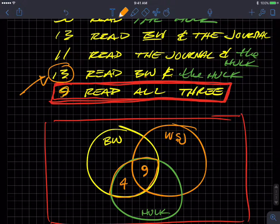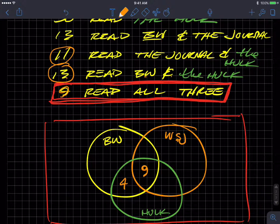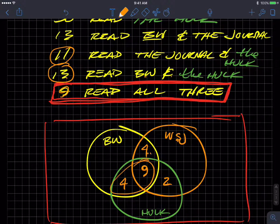Do the same thing for the overlap between Wall Street Journal and the Hulk. So Wall Street Journal and the Hulk, and that's 11. So that's two. Nine and two is 11. And then 13 Business Week and the Journal. That's this upper football. And so that's 13 minus nine. That's four there. They happen to be the same because it was 13 in this region and 13 in that region.